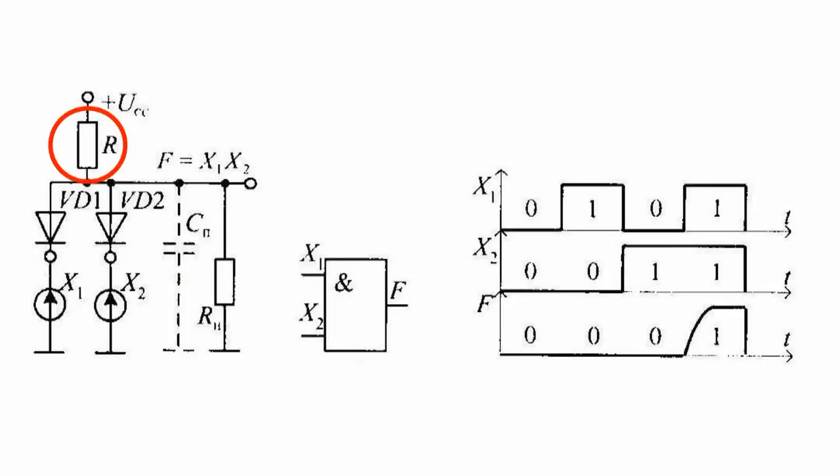If one of the inputs, say the right one, gets exposed to the low voltage level, diode VD1 opens. This involves current flowing from the power supply across the following circuit: resistor R, open diode VD1, and input signal source. The low voltage level is set at the output.